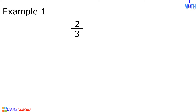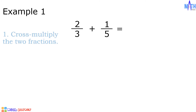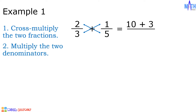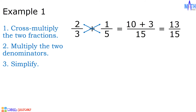Example number 1: 2 over 3 plus 1 over 5. Step number 1, cross multiply the two fractions. 2 times 5 is equal to 10, plus 1 times 3 is equal to 3, and 10 plus 3 is the numerator of the answer. Step number 2, multiply the two denominators. 3 times 5 is equal to 15, and 15 is the denominator of the answer. Step number 3, simplify. 10 plus 3 is equal to 13, and we copy the denominator. Since 13 over 15 is already in lowest term, 2 over 3 plus 1 over 5 is equal to 13 over 15.